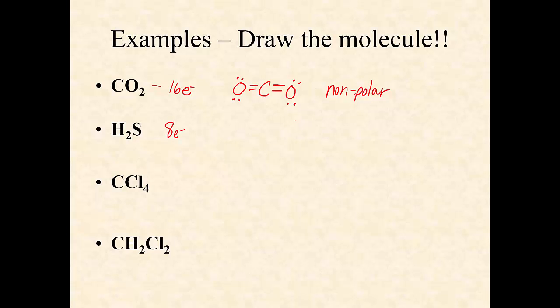Eight electrons, H2S. Sulfur has to go in the middle. Only thing it can go. Look at right here. It's a bent molecule. That tells you it's polar.